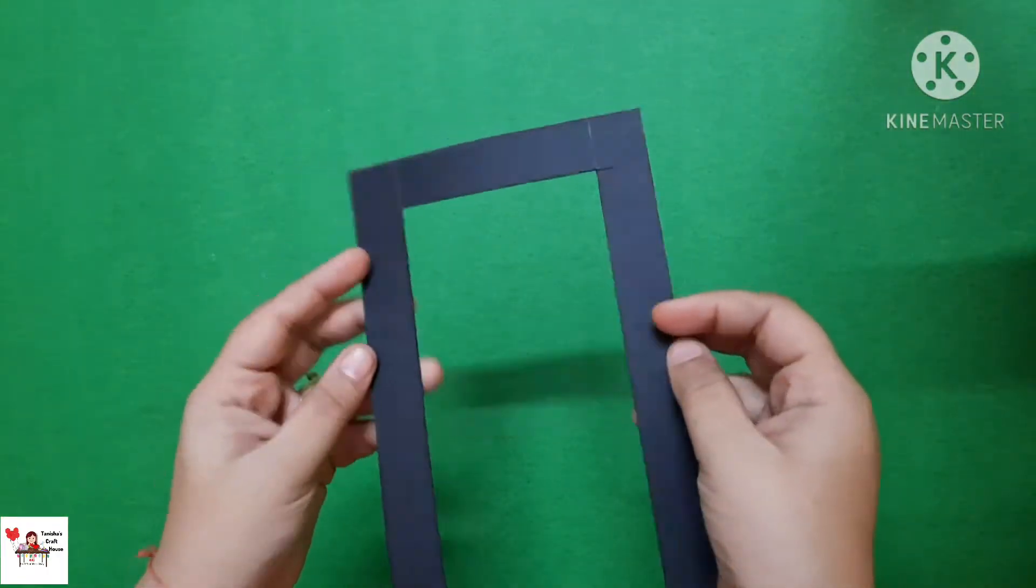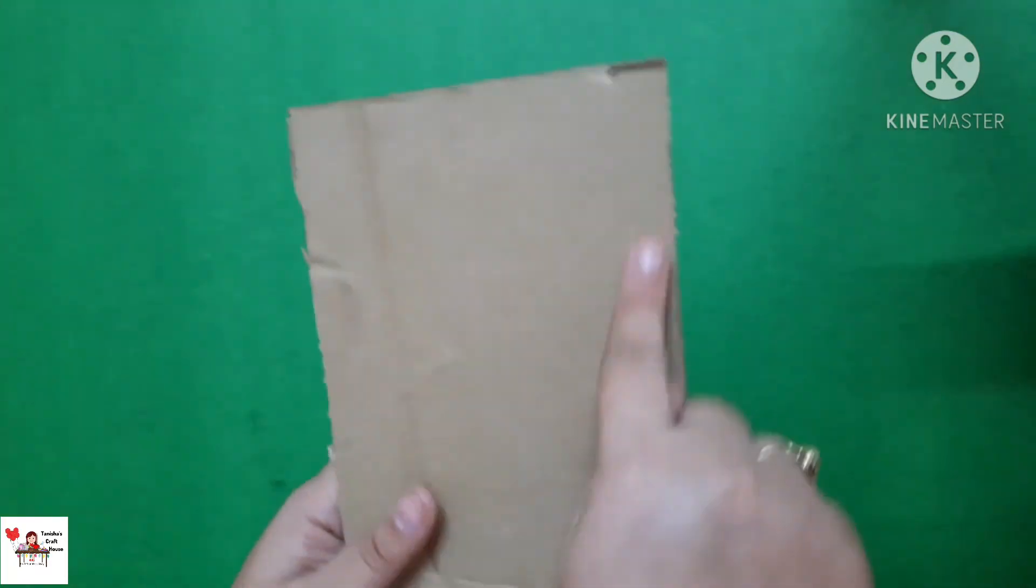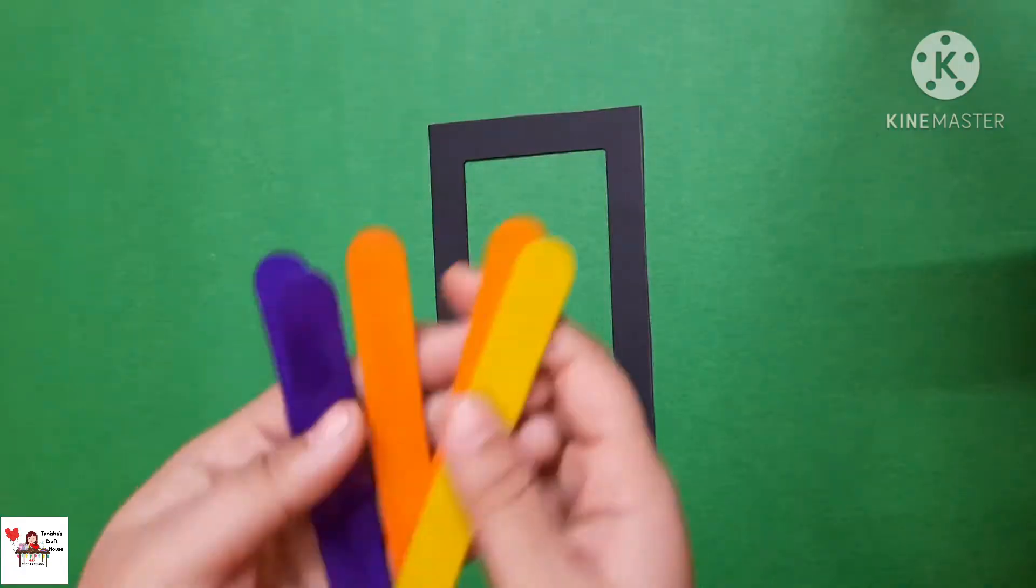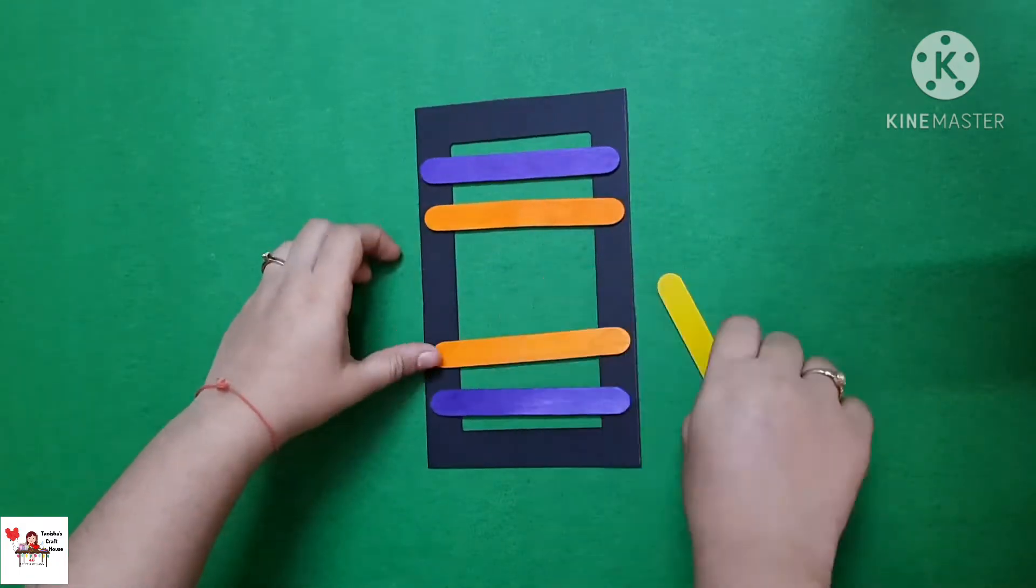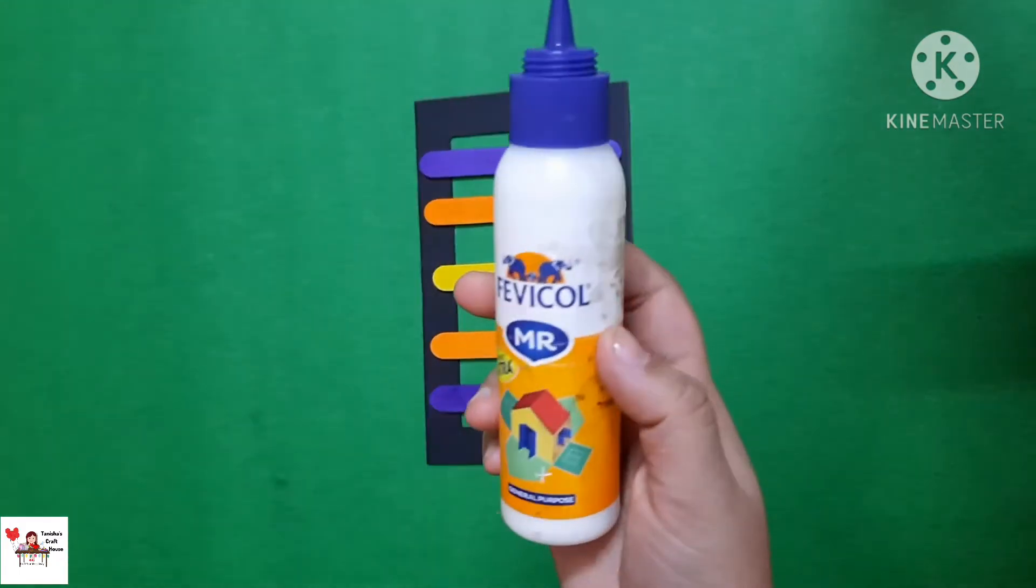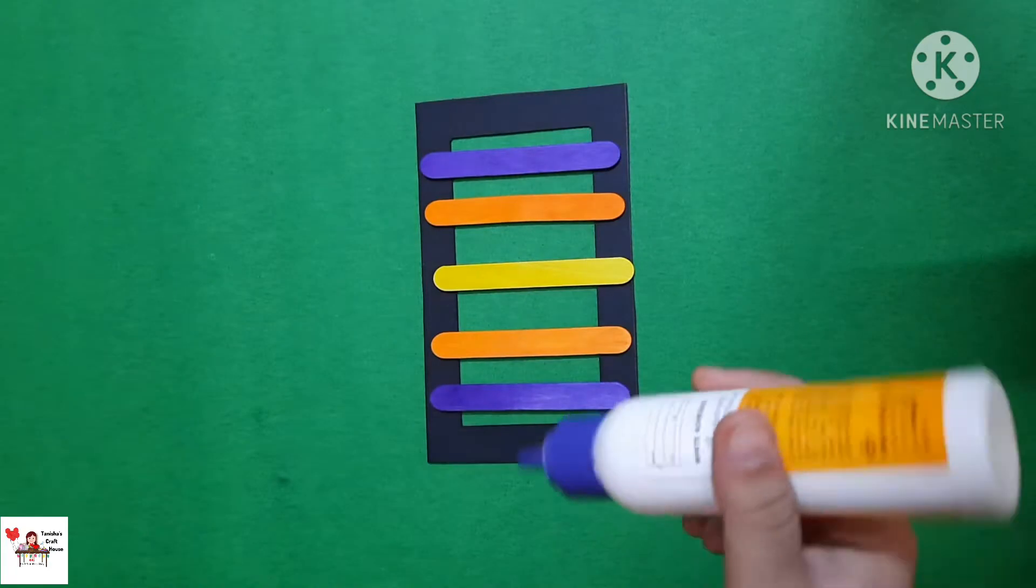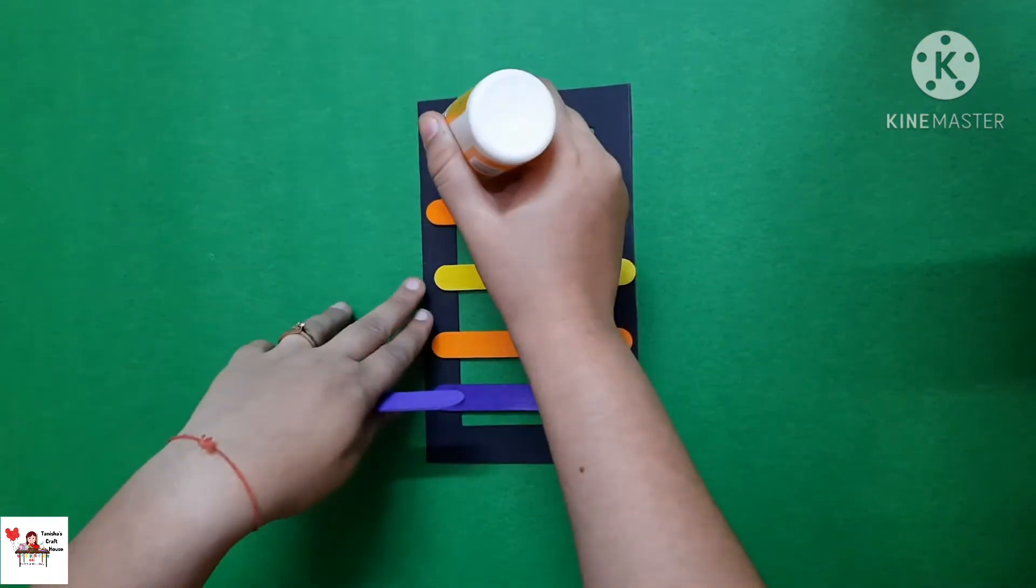So this is how it should look. Now if you're taking the plain cardboard you have to do the same thing and paint the frame into black color. Next I'm going to take some ice cream sticks and just make a color pattern and stick them.